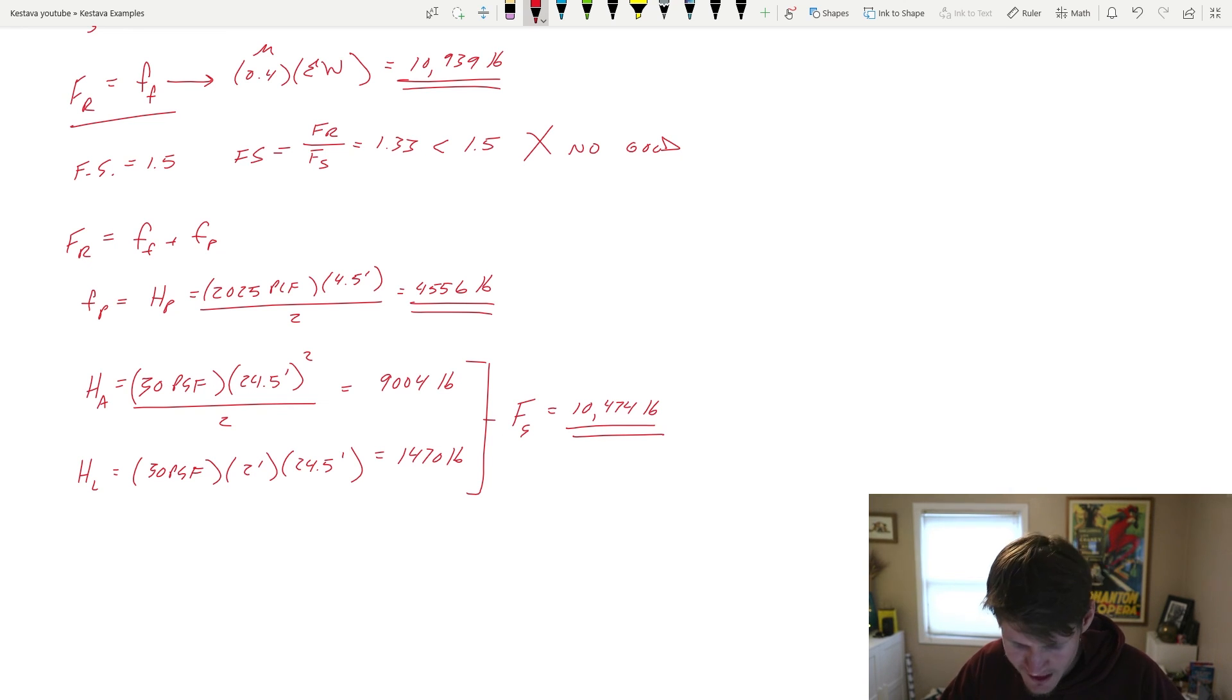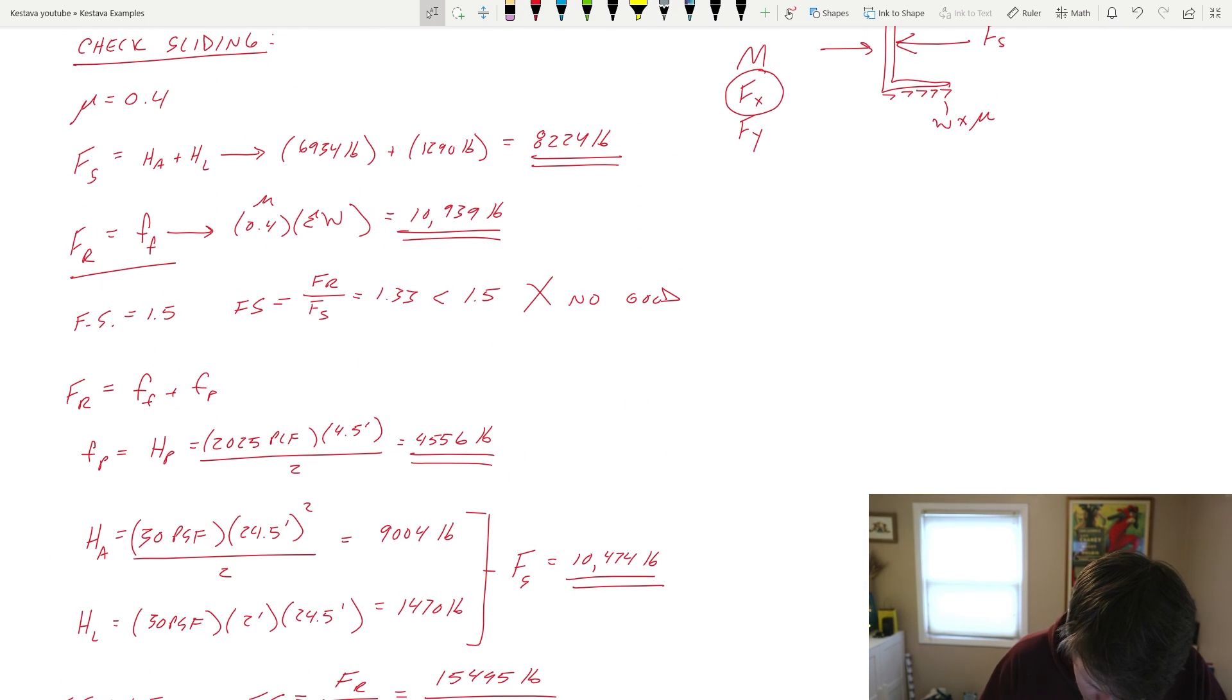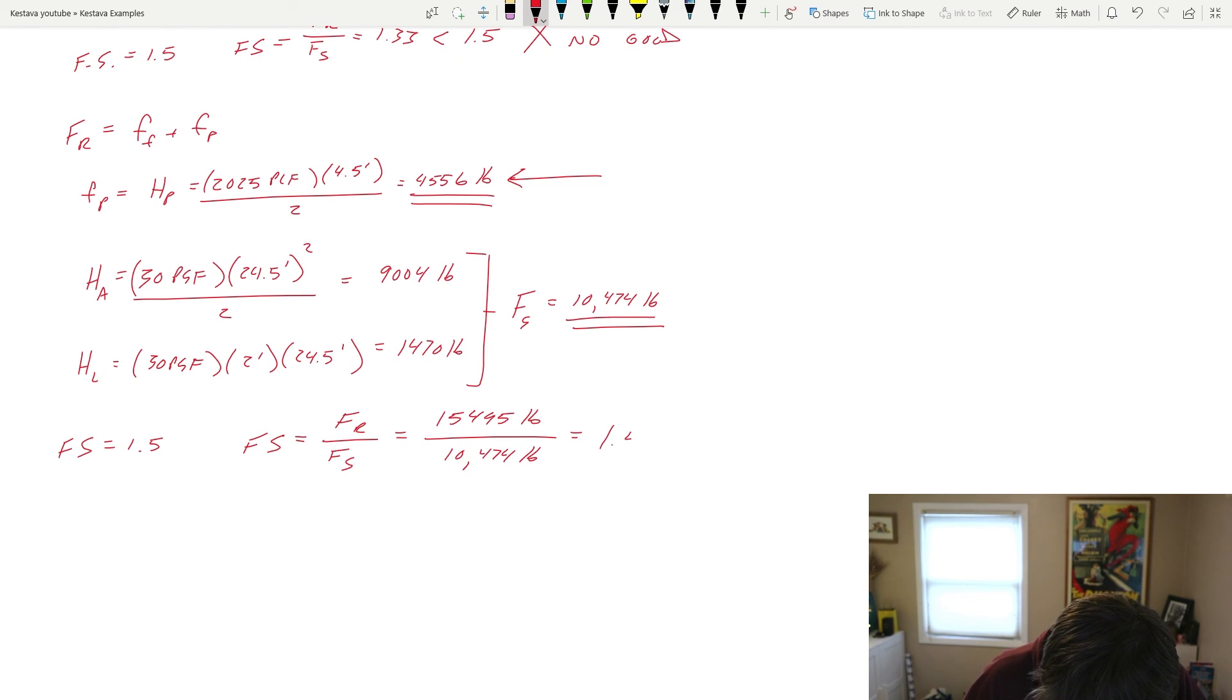All right. Our new FS, 10,474 pounds with a factor of safety, again, of 1.5. F resisting over F sliding equals 15,495 pounds over the 10,474 pounds. That 15,495 is simply your friction factor force plus your passive force. And that spits out 1.48, which is relatively 1.5. So from engineering judgment, we are going to say that we are okay here.